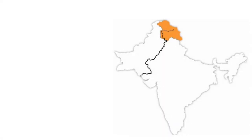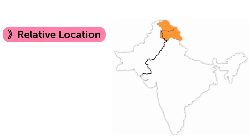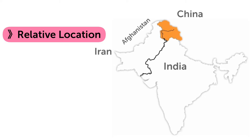The next point is relative location of Pakistan. Pakistan lies in the largest continent Asia. On the east side, India lies; on the north side, China; northwest, Afghanistan; southwest, Iran; and in the south, the Arabian Sea is situated.